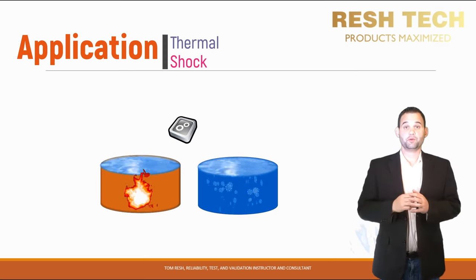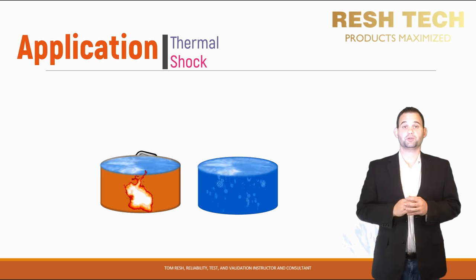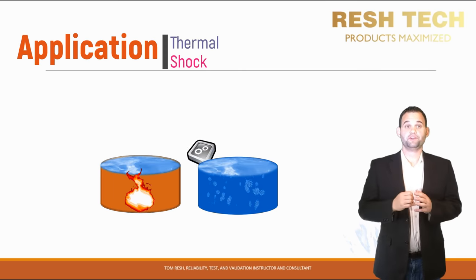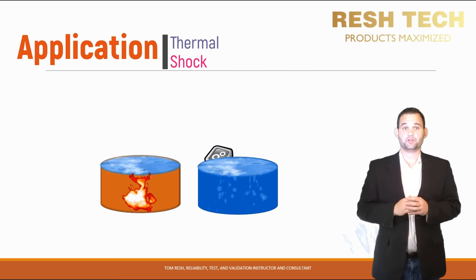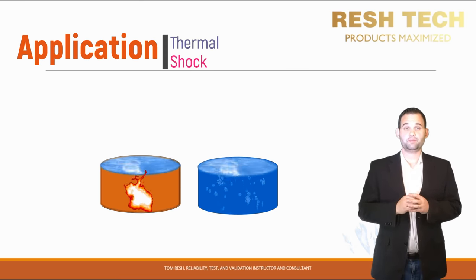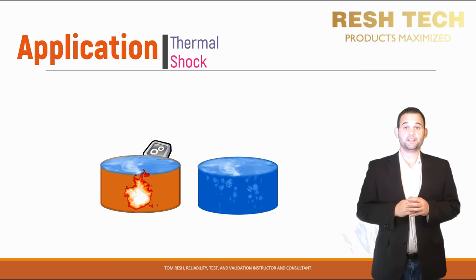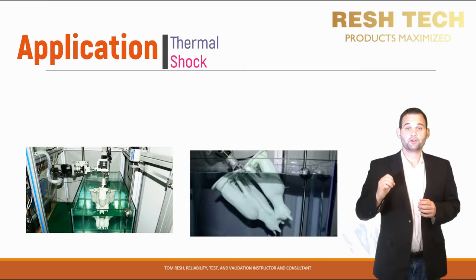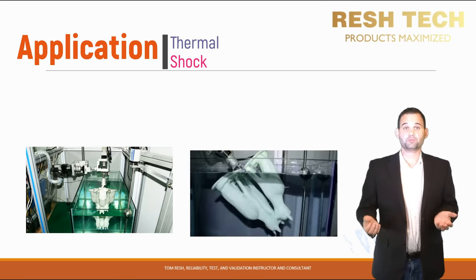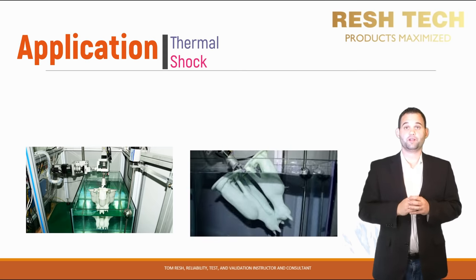The liquid-to-liquid thermal shock test is the most severe of the three types and can be too severe for most simulated applications, depending on your liquid temperatures and the environment you are trying to simulate. However, there can be use cases where it makes sense. For instance, if you have an industrial process that requires a robotic arm to be submerged in a hot vat of liquid and then moved over to a cold vat of liquid, that would be a good example of an application for liquid-to-liquid thermal shock.